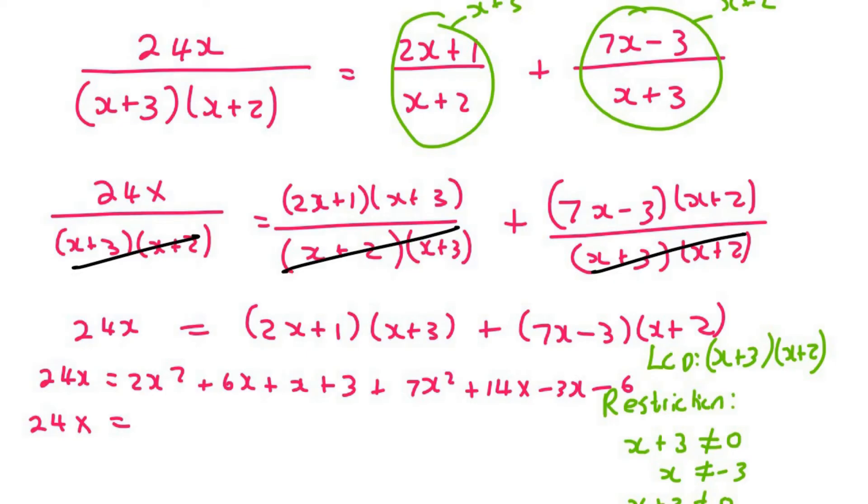Okay, so now I'm going to simplify on the right. 2x² plus 7x² is going to give me 9x². For the x terms, that's going to be 18x and then minus 3.